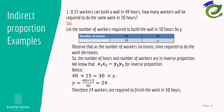More examples of inverse proportion: if you want to build a wall and you increase the number of workers, the time taken decreases. Also, if the distance to a place is fixed and you travel faster, it takes less time. In both cases, one quantity increases while the other decreases — this is inverse proportion.